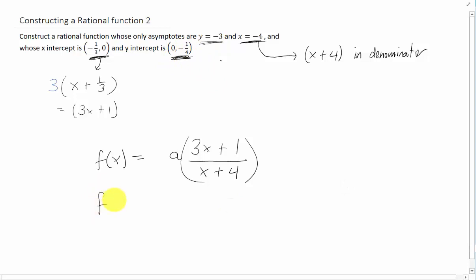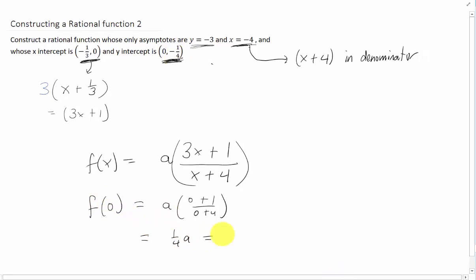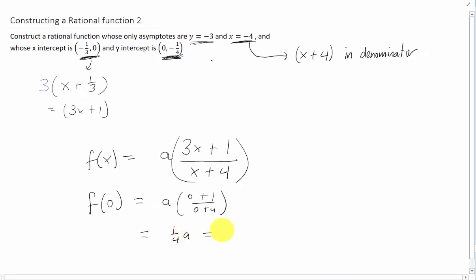Let's see what happens to this function if we plug in x equals 0. We still have an a outside and we have 0 plus 1 over 0 plus 4 on the inside which is 1 fourth times a. Now what does our y value need to be when we plug in x equals 0? It has to be negative 1 fourth. So whatever value we get here it better be equal to negative 1 fourth. And this immediately tells us that a has to be negative 1.